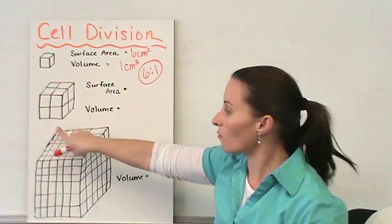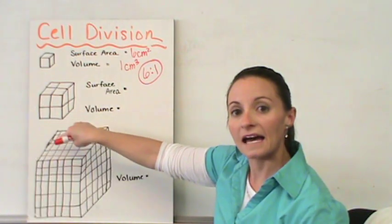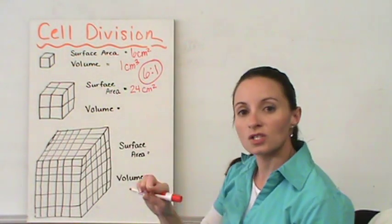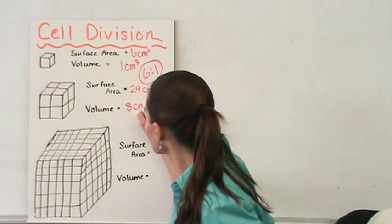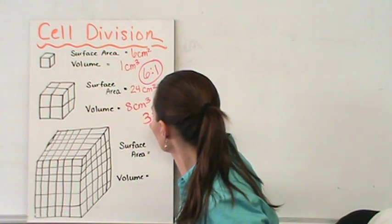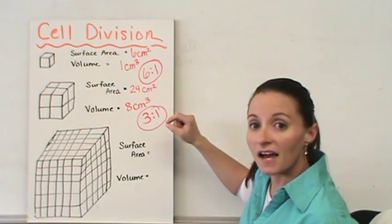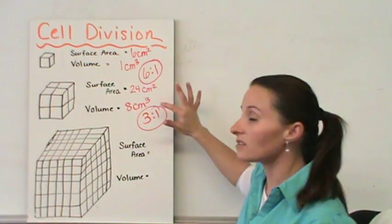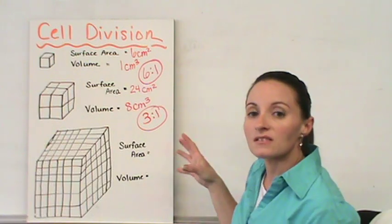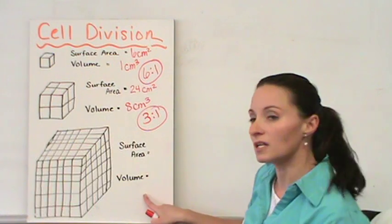If we look at the second box with two centimeters on each side, two by two gives us four centimeters squared per side. Adding up the six sides gives us twenty-four centimeters squared. The volume is two by two by two, giving us eight centimeters cubed. That's a three to one surface area to volume ratio. You're noticing that volume is increasing faster than the surface area is increasing. If the volume is increasing faster than the surface area, that means higher demands on the cell membrane, and eventually it won't be able to support the cell.